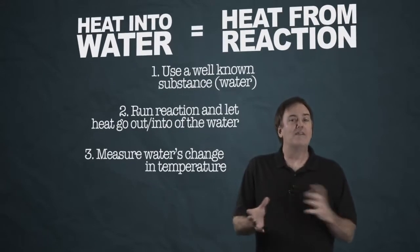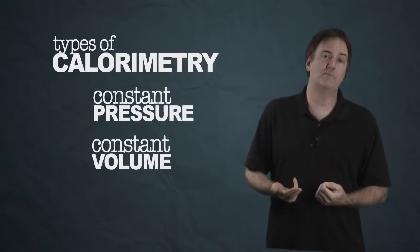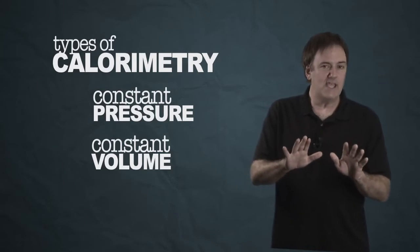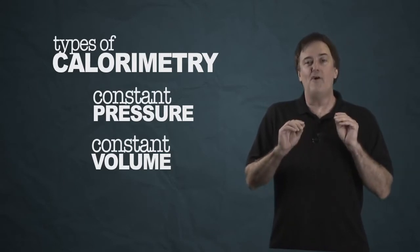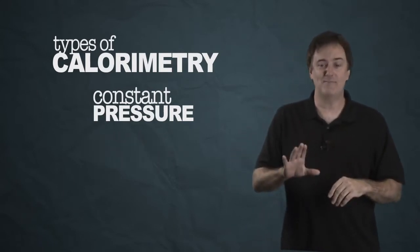Now it does require a little bit of planning ahead. You have to build yourself a calorimeter. Now we have two types of calorimetry. We have constant pressure and constant volume calorimetry. I'll start with the easy one. Constant pressure is the easy one. We'll get to the volume in a minute.